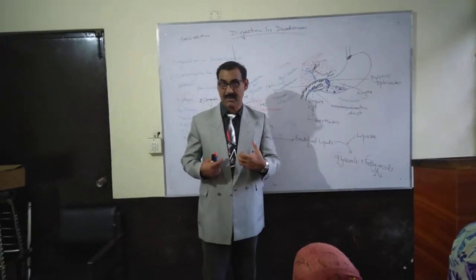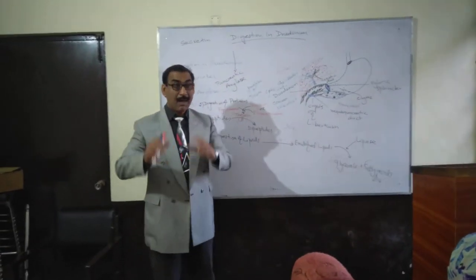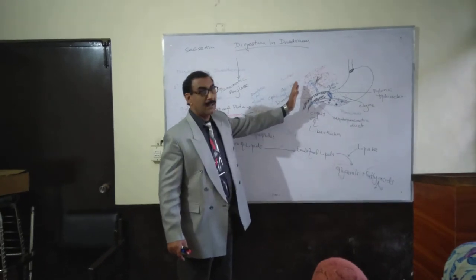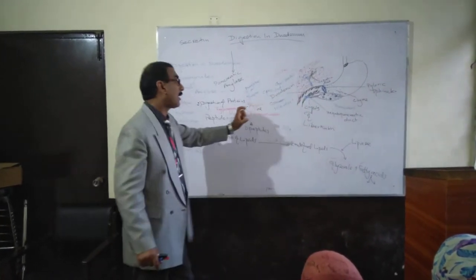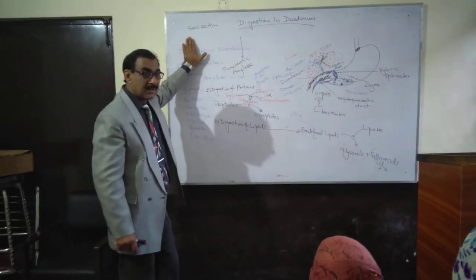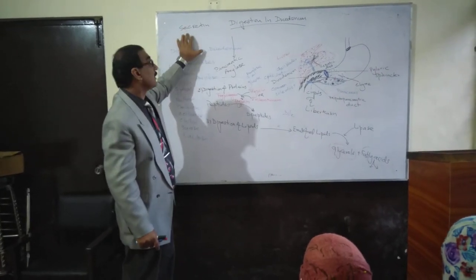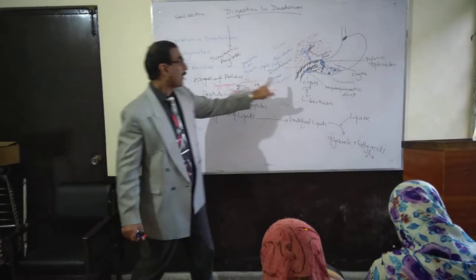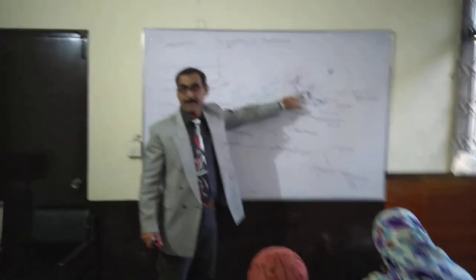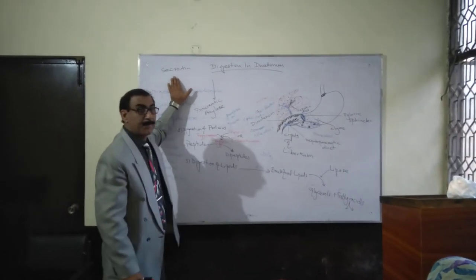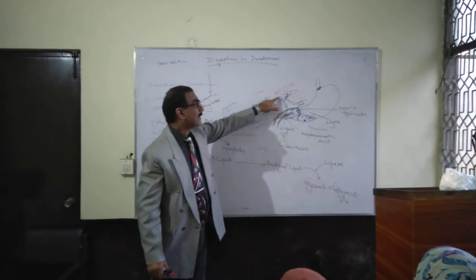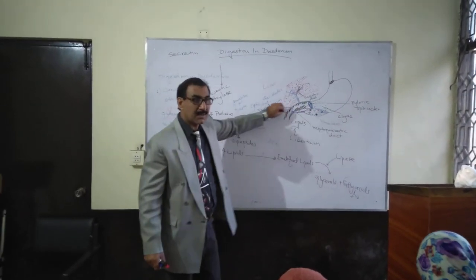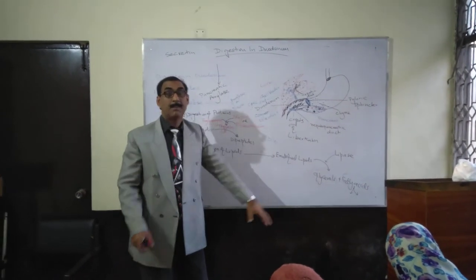Now, how are the secretions of the pancreas — pancreatic acids — and the secretion of bile regulated? These are regulated by secretin. Secretin is a peptide consisting of 27 amino acids, and it is produced from the duodenal mucosa. Secretin acts upon the gallbladder and pancreas to stimulate pancreatic juice secretion.